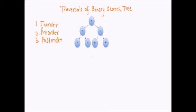Let's understand what in-order traversal of a BST is. In in-order traversal, before visiting a node, one must visit all the nodes in its left subtree. Once the in-order traversal of the left subtree is done, visit the node and then do in-order traversal of the right subtree. The order of visiting nodes is: left node, the node itself, then right node.